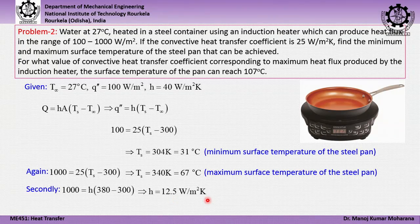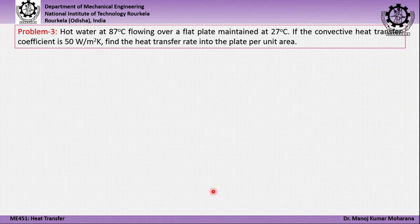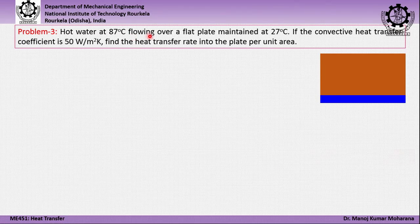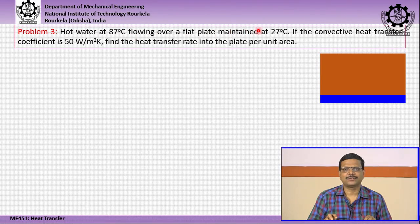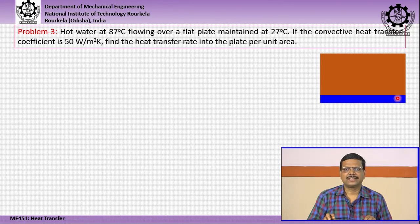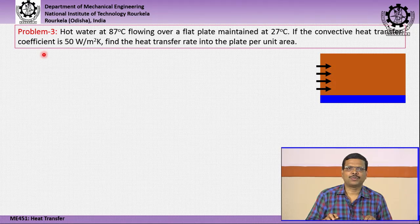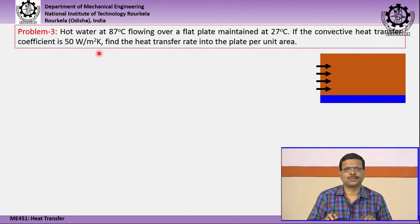Next, we solve another simple problem on convective heat transfer. Hot water at 87°C flows over a flat plate maintained at 27°C. The convective heat transfer coefficient h is 50 W/m²·K. We are asked to find the heat transfer rate into the plate per unit area, i.e., the heat flux q″.